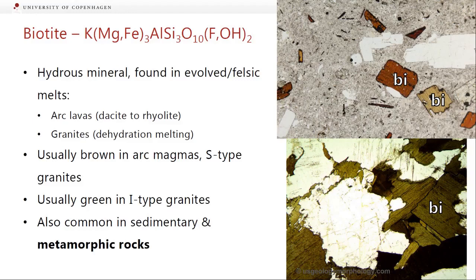Biotite is a magnesium- and iron-bearing mica — a hydrous mineral. It's almost always in evolved or felsic melts. You find it in some arc lavas — dacite to rhyolite compositions — and then in granites, where the water is coming from dehydration melting. It's usually brown in arc magmas and in S-type granites, but can be quite green in I-type granites. It's also common in sedimentary and metamorphic rocks, and breakdown of biotite is one of the main ways we get dehydration melting to make granite.